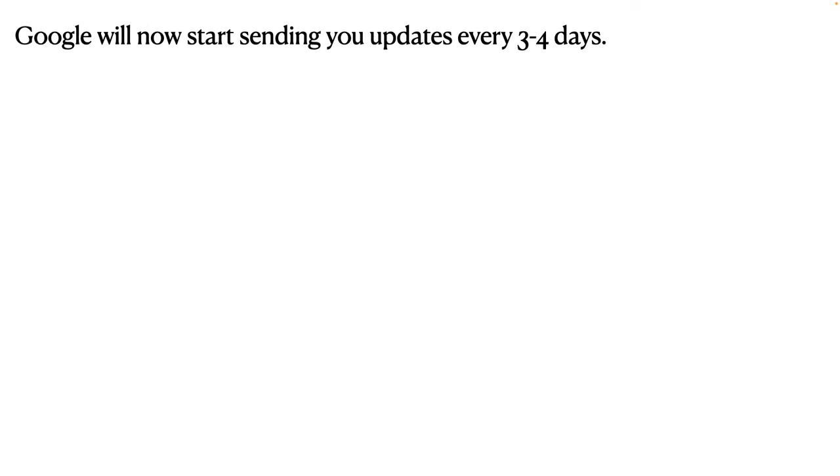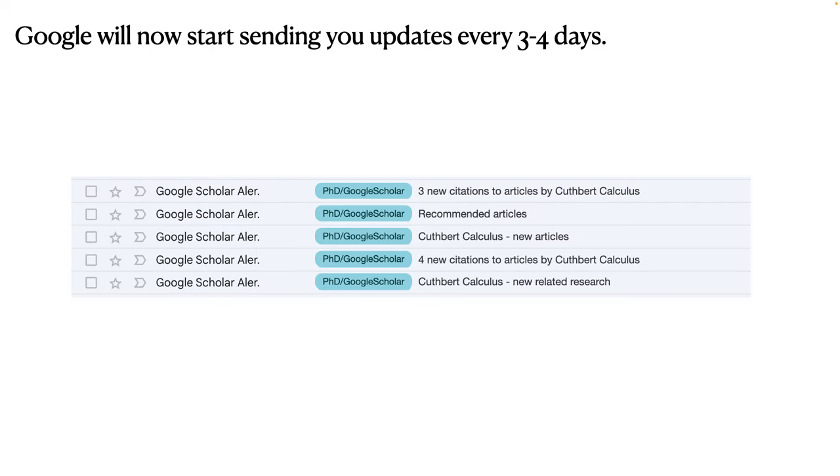Now, once you do all that, Google will now start sending you updates once every couple of days. And it's useful to create an automatic tag for those emails just so that they are immediately categorized as coming from Google Scholar. You might also want to automatically mark those emails as read just so that the notifications don't become intrusive. Because the last thing you want in your PhD is to get disturbing notifications.